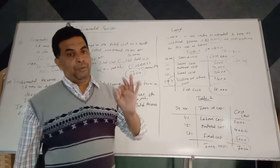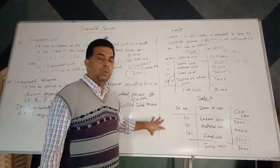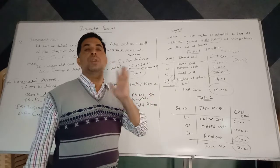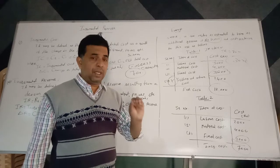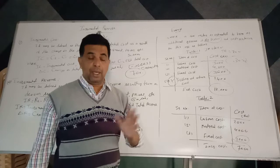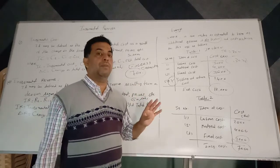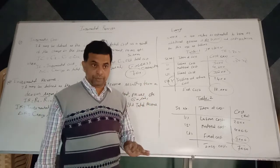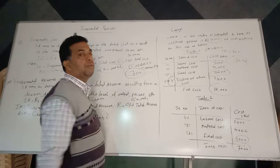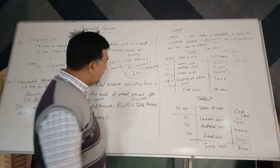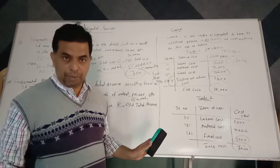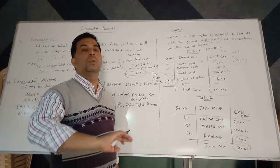With incremental revenue of Rs. 10,000 and incremental cost of Rs. 7,000, the profit is Rs. 3,000, so the proposal should be accepted. The full cost approach did not permit the firm to accept the order, but incremental cost analysis does. However, a very important caution: incremental cost does not mean the firm should accept all orders that do not cover full cost. If the firm is operating at full or near-full capacity, the order should not be accepted because the firm has no opportunity to reduce costs.